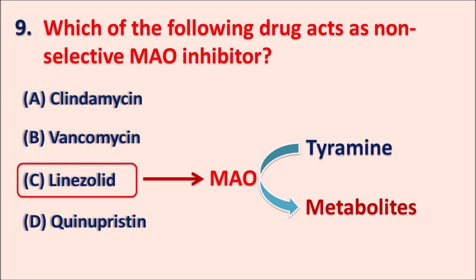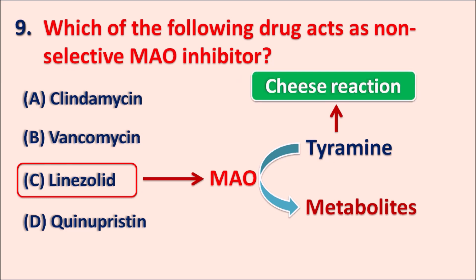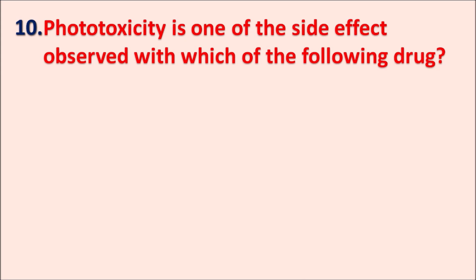When linezolid inhibits the MAO enzyme, it results in increased tyramine levels, which produce hypertensive crisis. This reaction is called the cheese reaction because cheese is rich in tyramine. So the cheese reaction is observed with MAO inhibitors, and linezolid's additional MAO inhibitory activity can also produce it. It should be carefully given with foods containing tyramine as well as other monoamines.